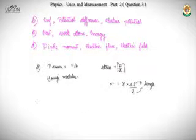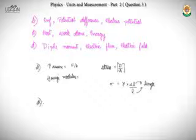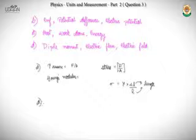A useful exam strategy: JEE setters often put the correct answer in option D so that students waste time going A→B→C→D. The recommended order to check options is A, D, B, then C. So we check option D next.